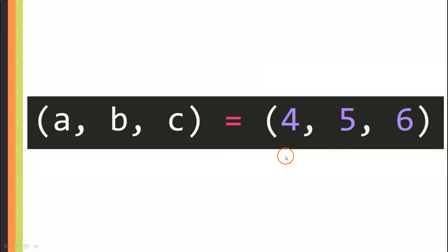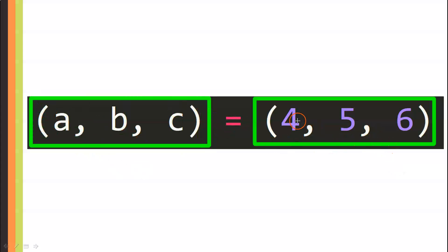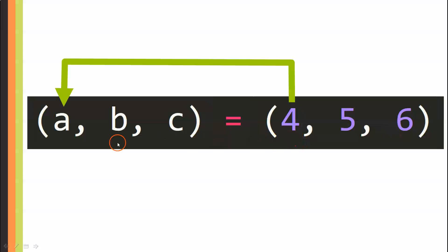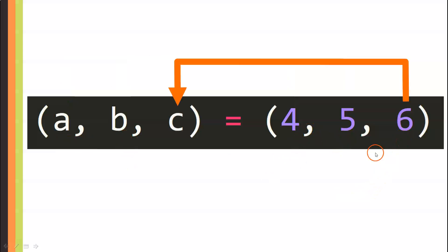Here is an example. We have a tuple on the right that contains three values: 4, 5, and 6. These values are going to be assigned individually to the variables contained in the left-hand tuple — variables a, b, and c. Three variables for three values. The value 4 is assigned to variable a, 5 to b, and 6 to c, because they match in their position from left to right.